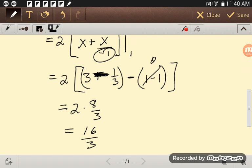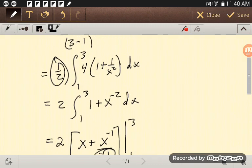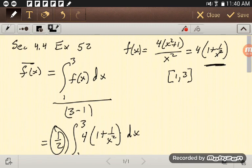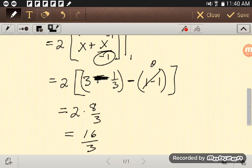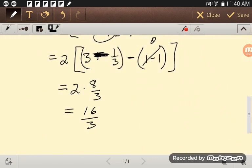And so there we've found the average value, 16 over 3. So kind of checking these, 16 over 3 is 5 and a third.